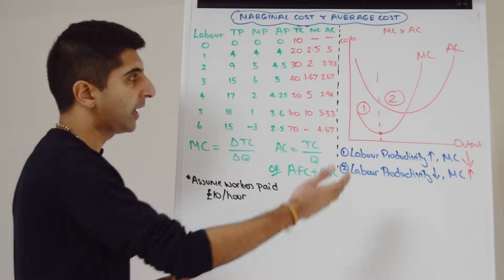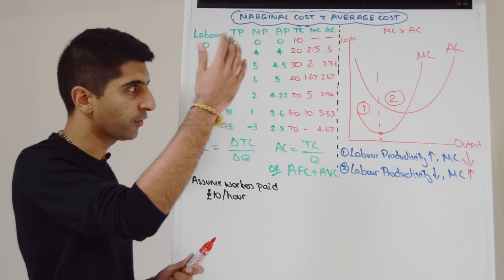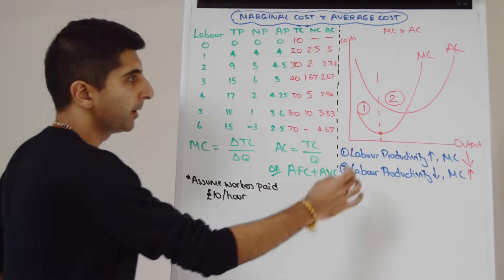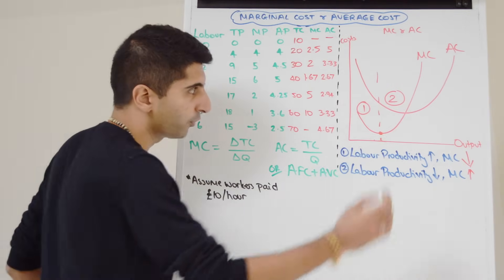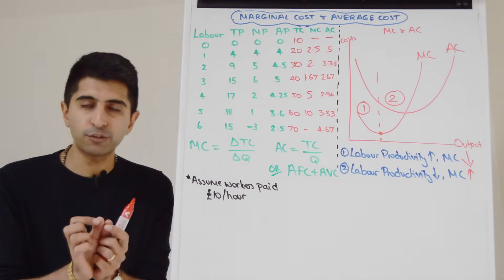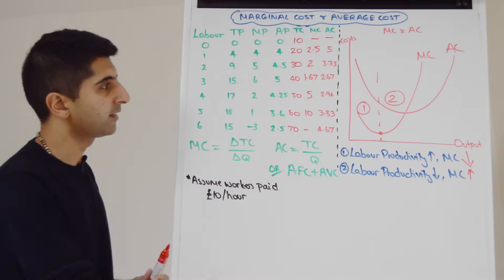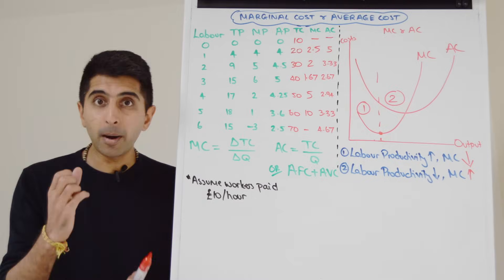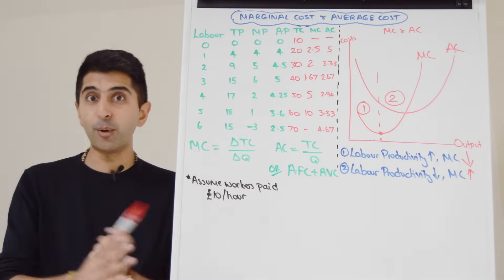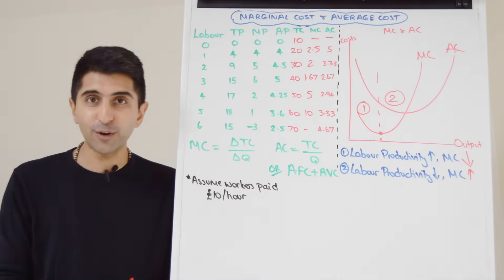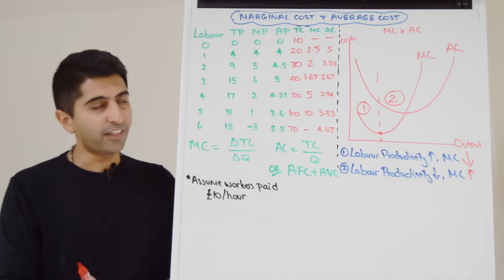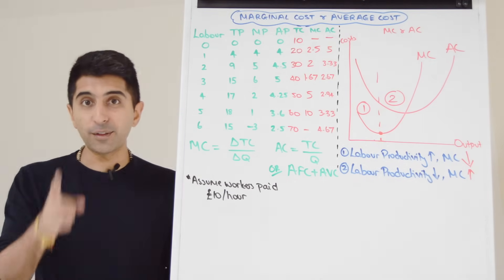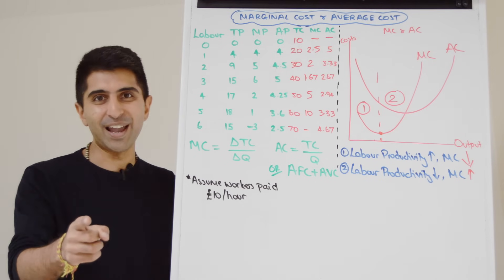So that explains the shape of the marginal cost curve, and the average cost curve also follows the same kind of logic. Marginal cost is what you want to break up to really illustrate the law of diminishing returns and why this curve is shaped the way it is. Now you've got marginal cost and average cost to add to your portfolio of different cost curves in the short run. Thank you so much for watching — I'll see you all in the next very important video.